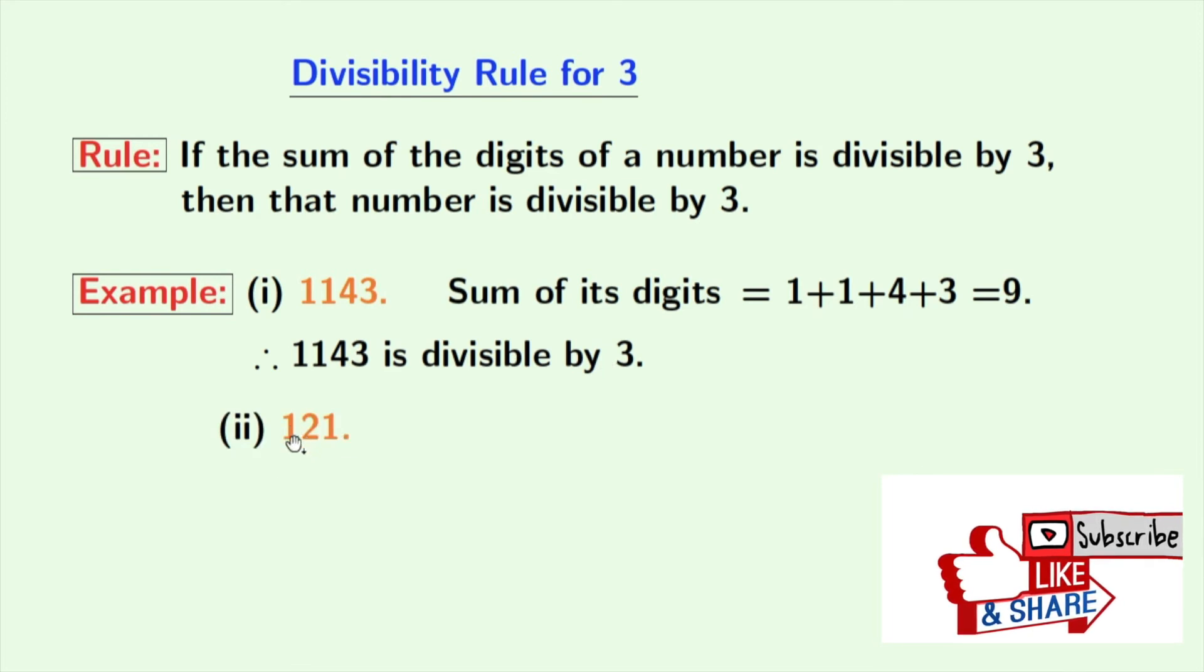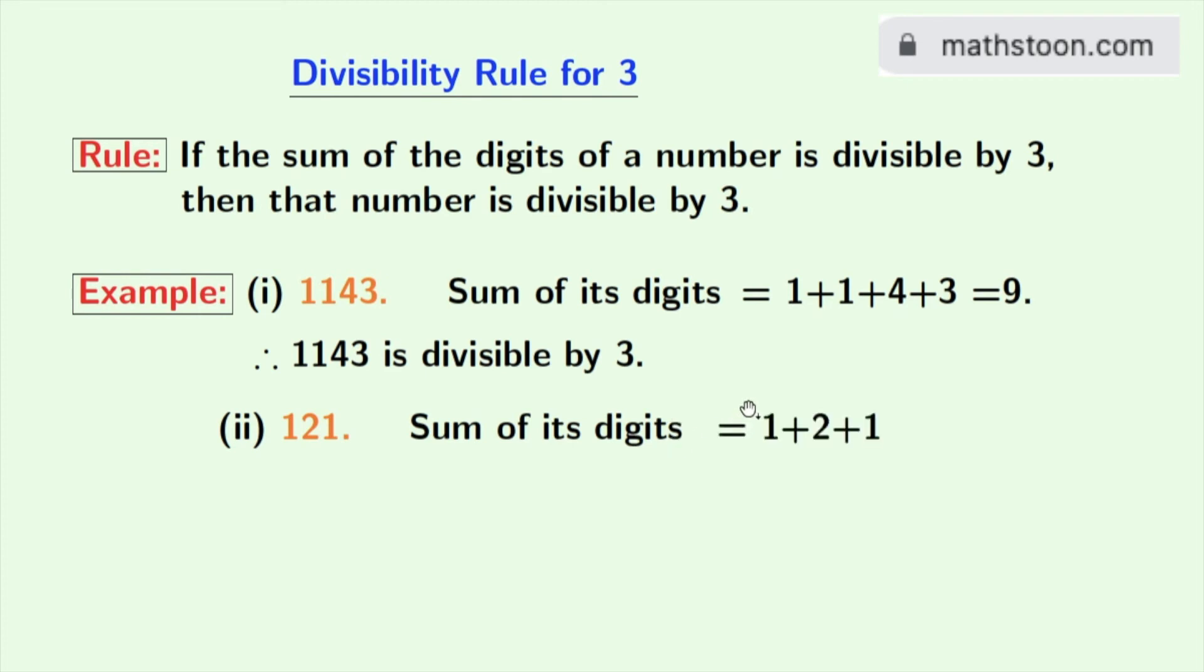Next, we have taken 121. The sum of its digits is 1 plus 2 plus 1, which is equal to 4.